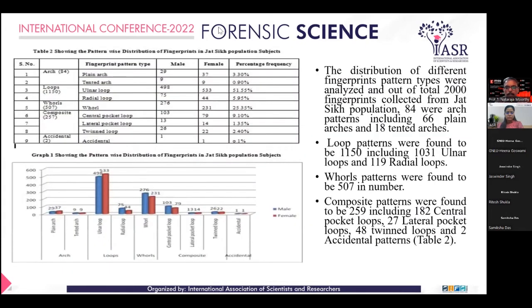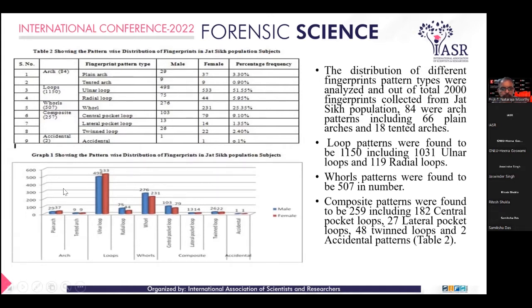Table 2 shows the distribution pattern of fingerprints in the Jat-Sikh population. A total of 2,000 fingerprints were collected, among which 84 were arches including 66 plain arches and 18 tented arches. Loop patterns were found to be 1,150 including 1,031 ulnar loops and 119 radial loops. Whorl patterns were found to be 507 in number. Composite patterns were found to be 259 including 182 central pocket loops, 27 lateral pocket loops, and 48 twin loops including 2 accidental patterns. This table has been represented in graphical form.